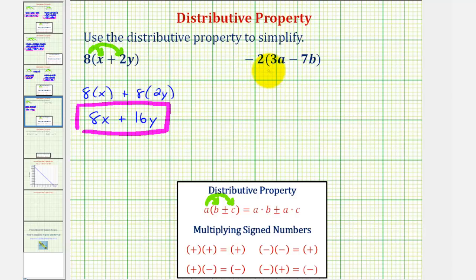Next, we have negative 2 times the quantity 3a minus 7b. So we'll have negative 2 times 3a minus negative 2 times 7b.